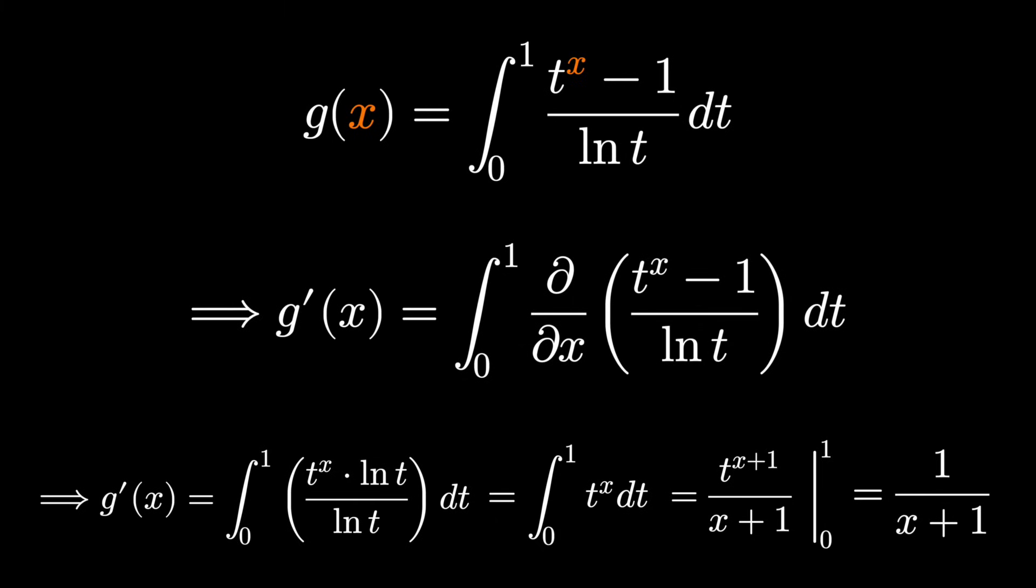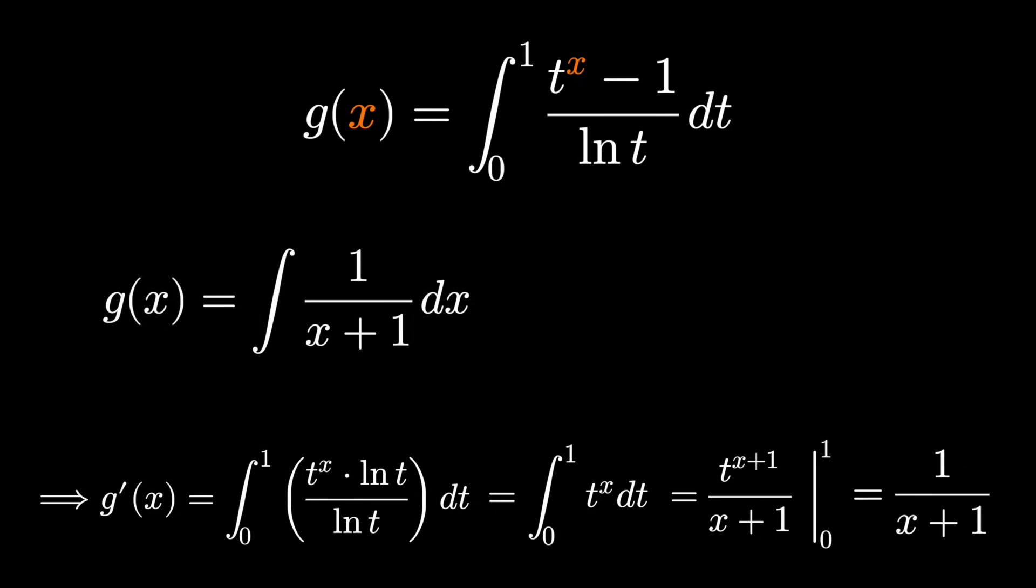The difference here is that our result is actually the derivative of the function we really want. So really, we have to integrate this. If we take the antiderivative of 1 over x plus 1, it's natural log absolute value of x plus 1, and we need a constant plus c.